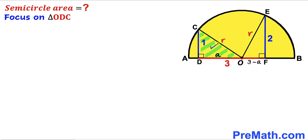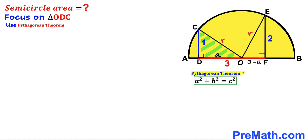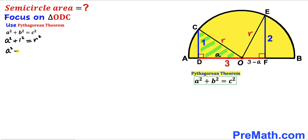Let's focus on right triangle ODC and apply the Pythagorean theorem. Our hypotenuse is r, and the two other legs are a and one. Filling in the formula gives us a² + 1² = r², which simplifies to a² + 1 = r². We label this as equation number one.